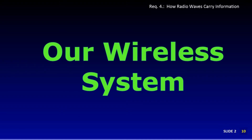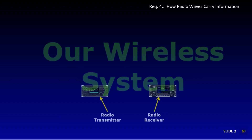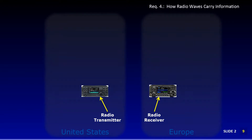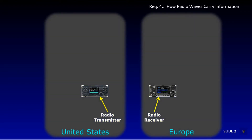If electrical power, cell phones, and telephone service go out, you can still get through with radio using batteries, generators, or solar. Radio uses transmitters to generate energy waves and a radio receiver to detect them and make them useful. There can be tens, hundreds, or thousands of miles between the transmitter and receiver.